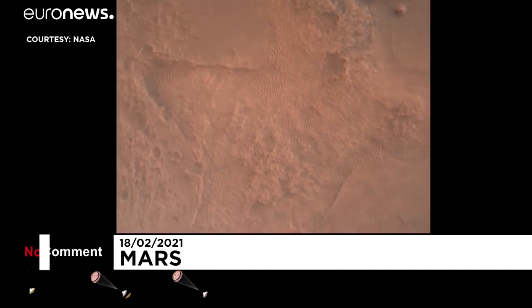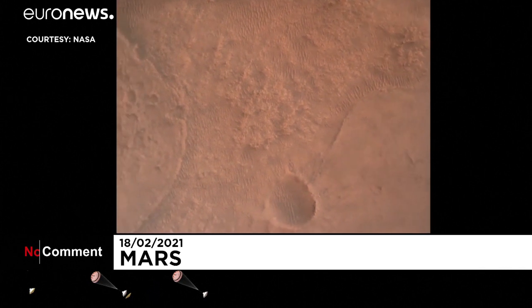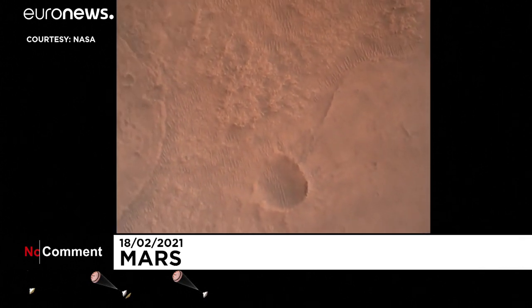Current velocity is 145 meters per second and an altitude of about 9.5 kilometers above the surface. LVS valid. We have confirmation that the lander vision system has produced a valid solution and part of terrain relative navigation. Priming.